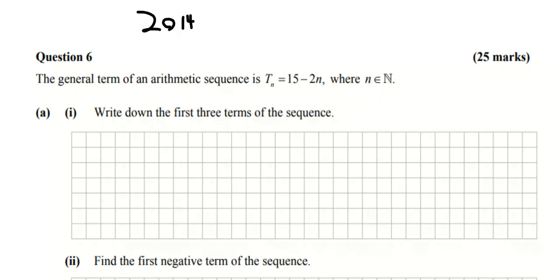Okay guys, we're looking at the 2014 paper one, question six. We're given a Tn formula which is 15 take away two times whatever we want. This is an arithmetic sequence which means the gap is always the same between each one, and we gotta do this three times and constantly replace the n value either one, two, or three because it wants the first three terms.